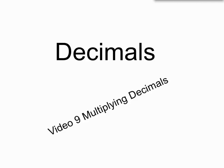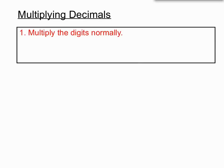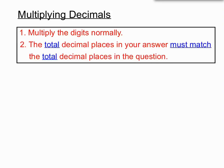We're on to video 9 of the decimals video series, and this time we are looking at multiplying decimals. To multiply decimals, we multiply the digits normally, and a special rule kicks in: the total decimal places in your answer must match the total decimal places in the original question.